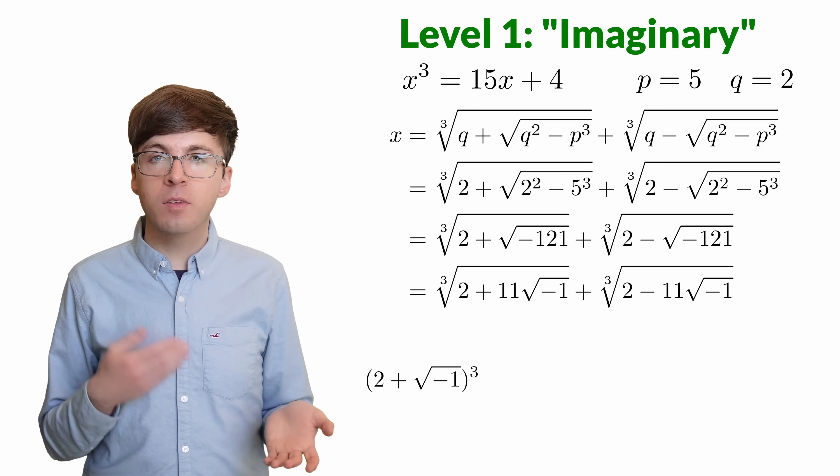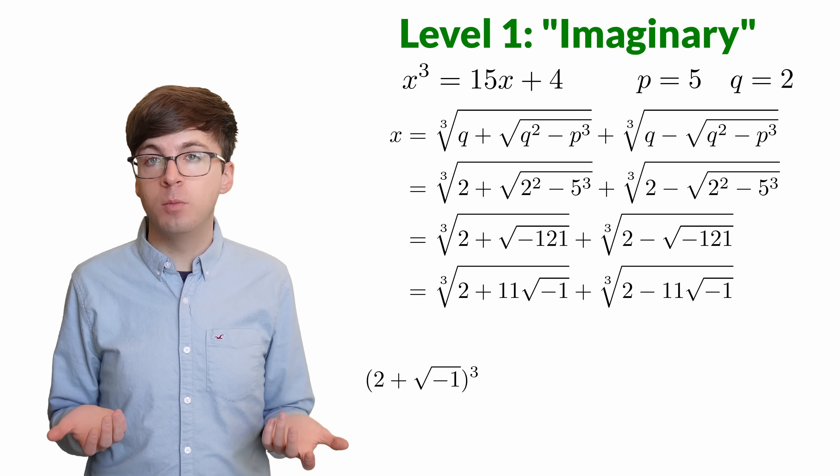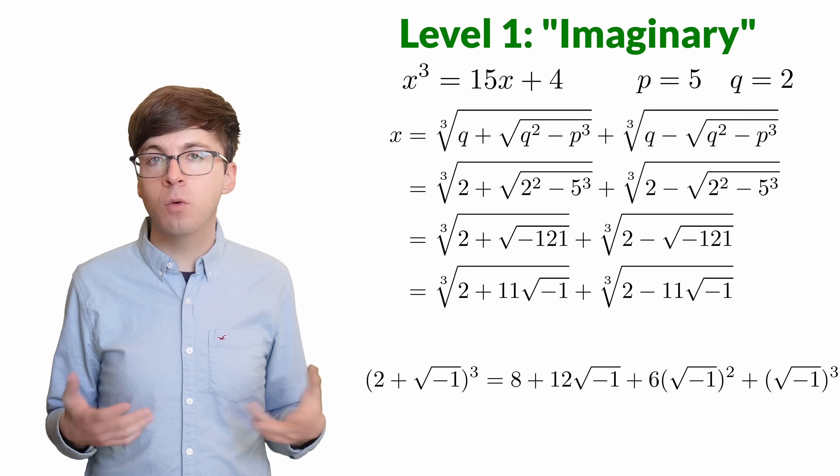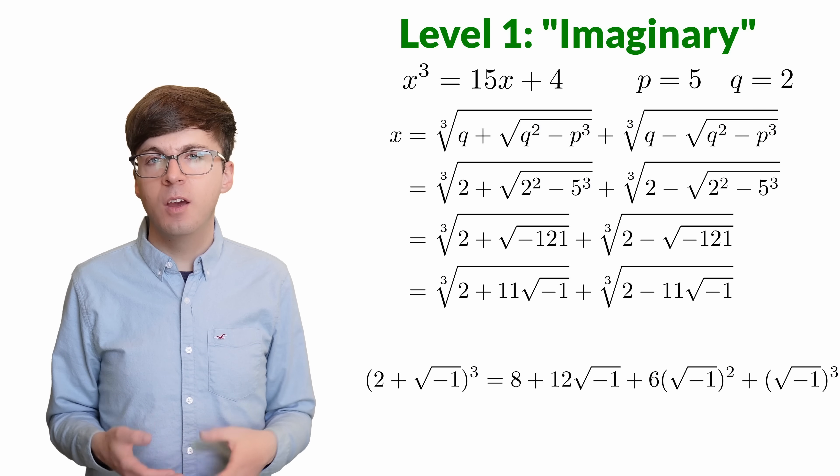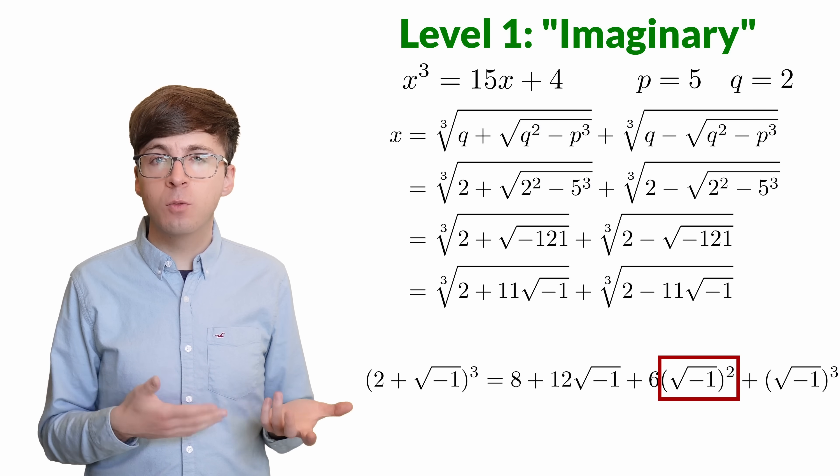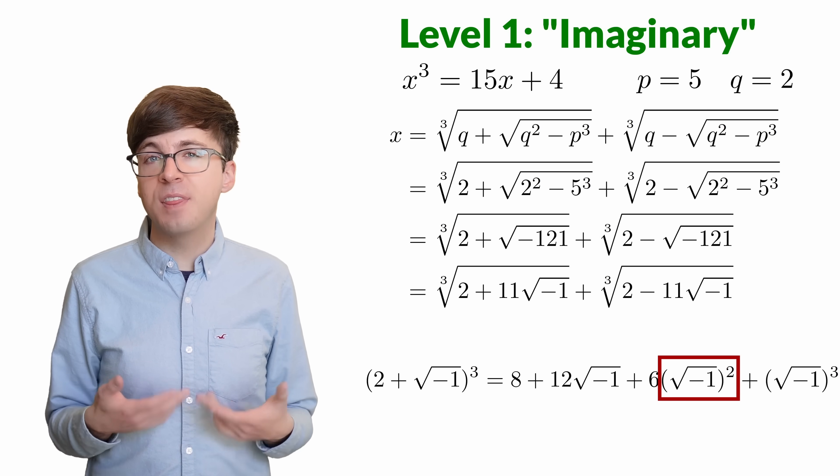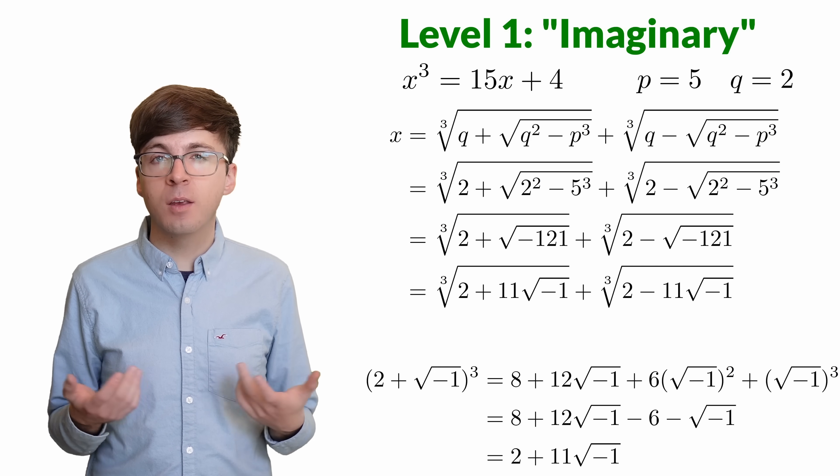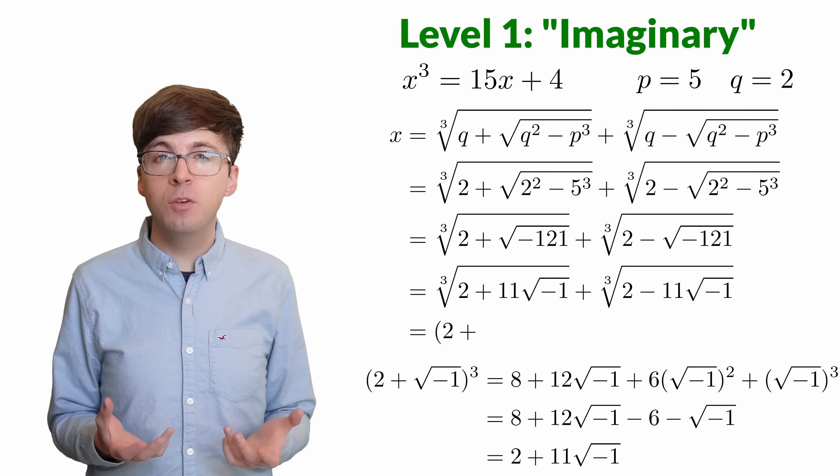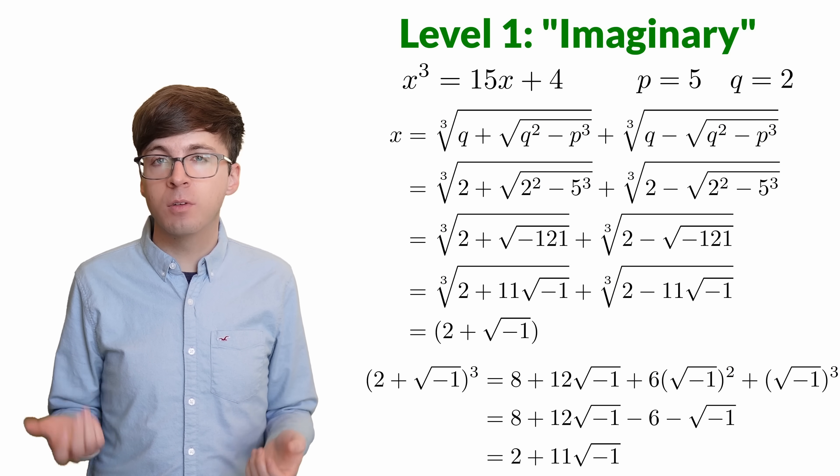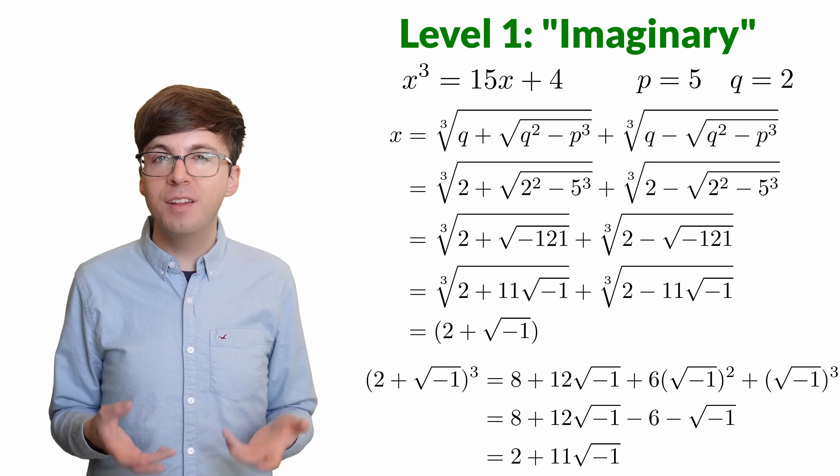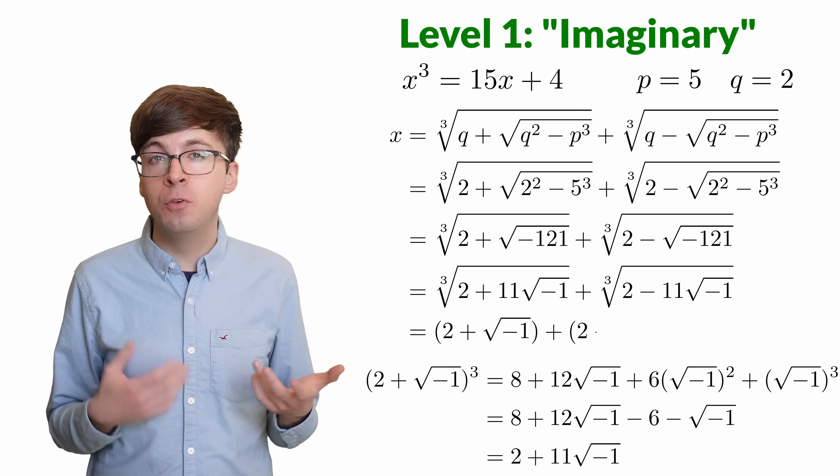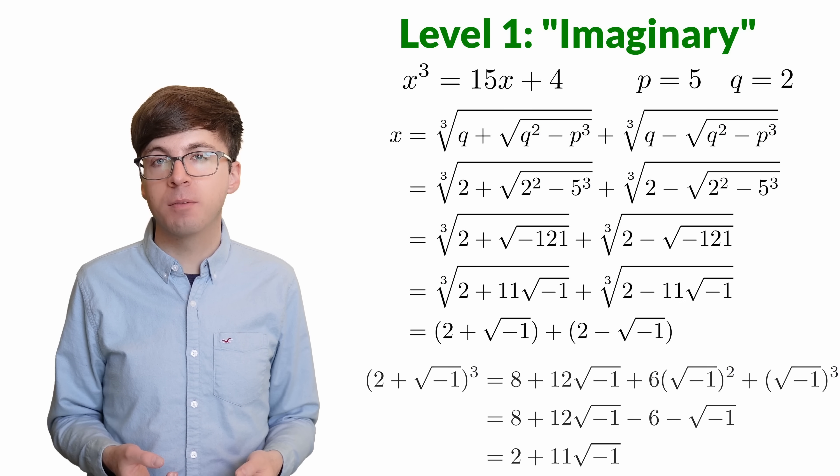What's 2 plus the square root of negative 1 cubed? We can multiply it all out or use the binomial theorem. When we simplify, if we have the square root of negative 1 squared, that's just negative 1. So we end up getting 2 plus 11 times the square root of negative 1. So we can say that this cube root is 2 plus the square root of negative 1. And similarly, this other cube root turns out to be 2 minus the square root of negative 1.